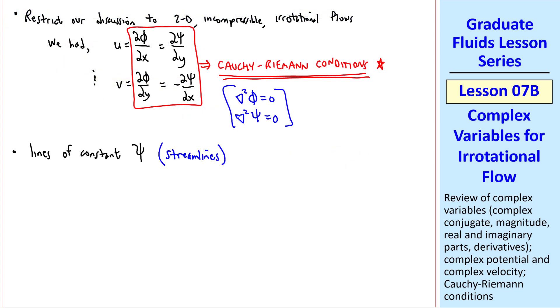It also turns out that lines of constant psi, streamlines, and lines of constant phi, which we'll call equipotential lines, are mutually orthogonal, which means that they cross each other at right angles or 90 degrees.